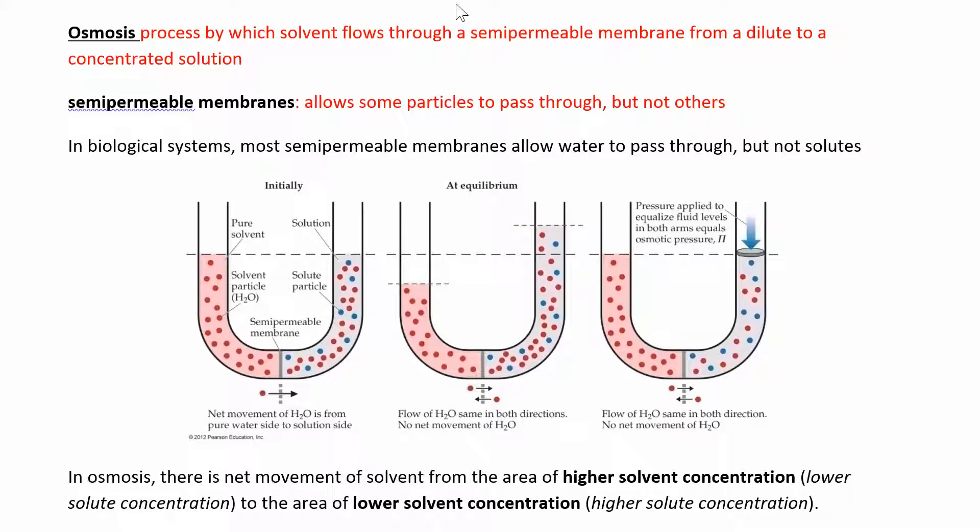Our last colligative property is osmosis. Osmosis is the process by which solvent flows through a semi-permeable membrane from where there is more solvent, or a more dilute solution, to a more concentrated solution.